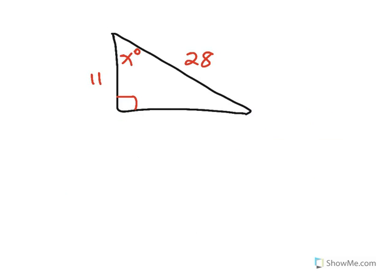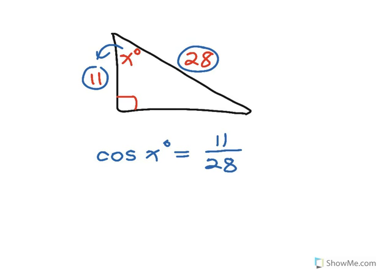One last example to show how to use inverse functions with sine and cosine — it's the same as with tangent. I have an unknown angle X. I know the hypotenuse of 28 and the side adjacent to angle X is 11. With adjacent and hypotenuse, I use the cosine function: the cosine of X degrees equals the ratio of 11 to 28. When I know the ratio of the side lengths but not the degree measure, I can use my inverse function. So X is equal to the inverse cosine — on my calculator, cosine negative 1 — of the ratio 11 to 28.